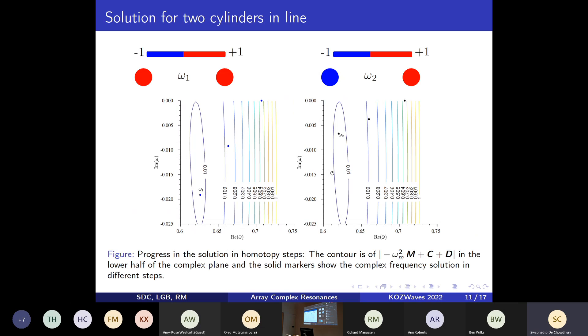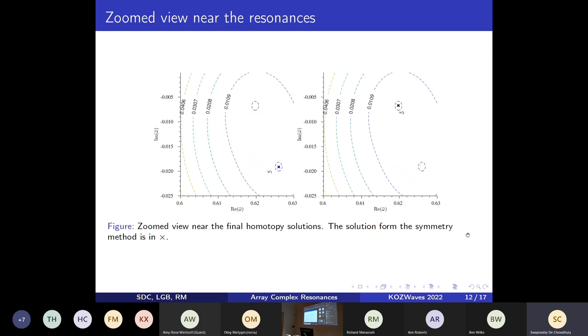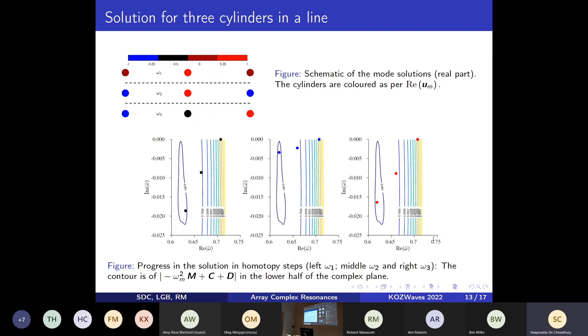Now to start with arrays, the simplest test case is with two cylinders. The pictures on the top show the modal position of the cylinders in two modes. The pictures on the bottom left and right show the progress in the homotopy solution in three homotopy steps. If we zoom in near the complex resonances, you can see that we are capturing the poles extremely well. For this case, we can adopt the symmetry-based method that I showed a couple of slides earlier involving the transformation matrix G. The solution from this method is shown here as a little cross in these two figures.